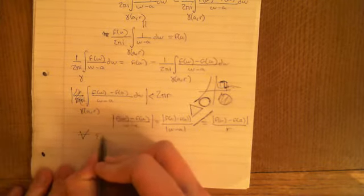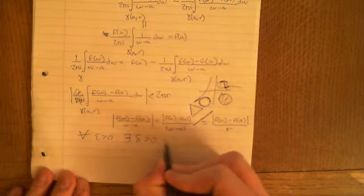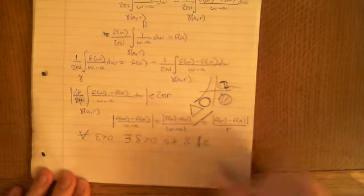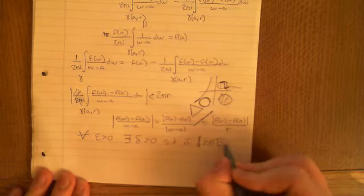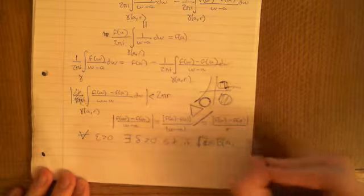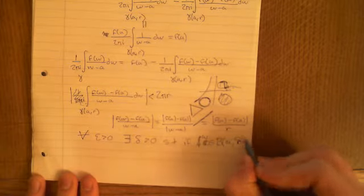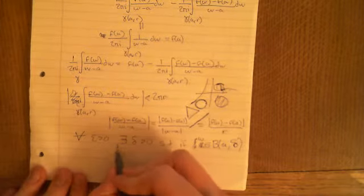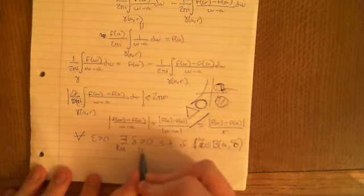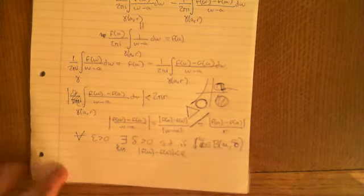This is the reciting bit. For all epsilon greater than 0, there exists a delta greater than 0, such that if the complex number w, in fact I should use the letter w since we're using that there, if w is contained within the ball around a of radius delta,